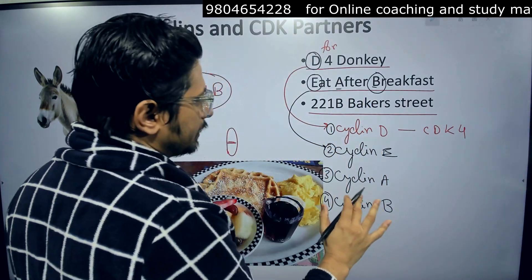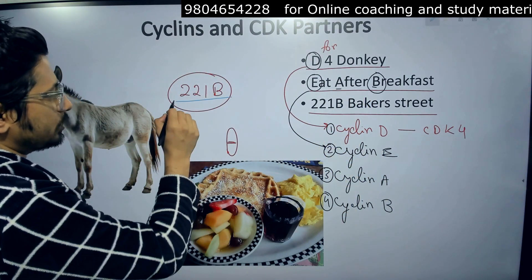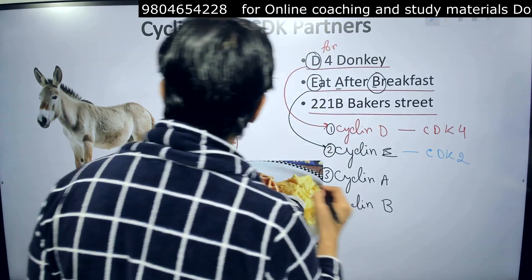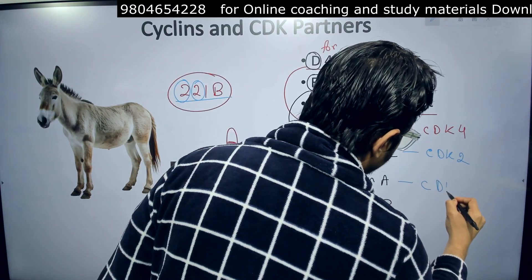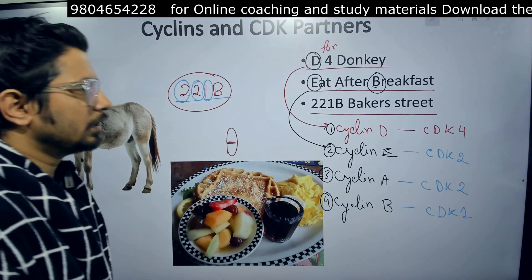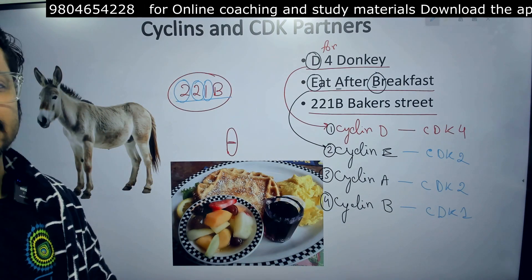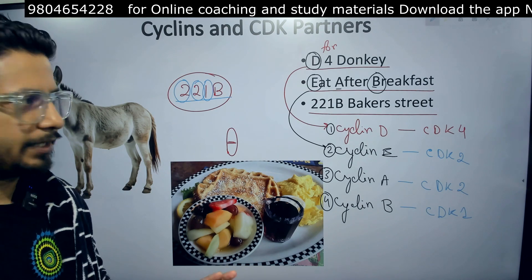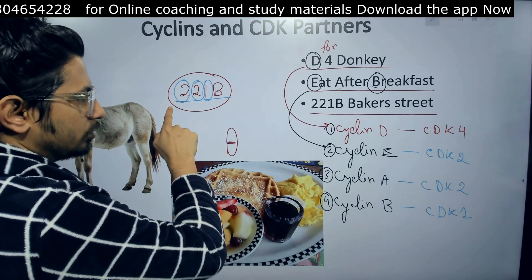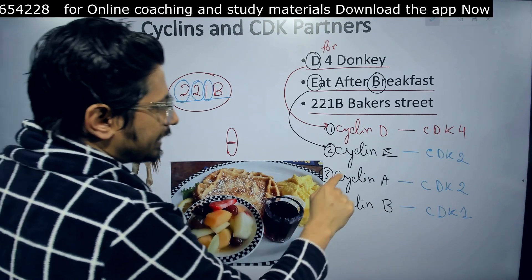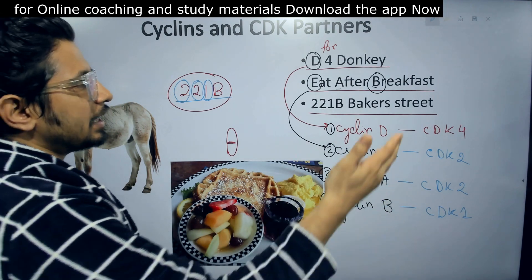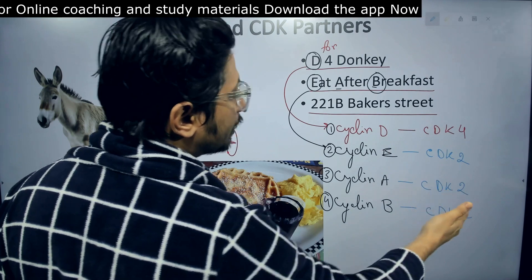Now for the CDK partners — remember Sherlock Holmes' address: 221B. So you have a 2: write CDK2. Another 2: write CDK2. And another 1: write CDK1. So for cyclins and their CDK partners, the table is: cyclin D associated with CDK4, cyclin E associated with CDK2, cyclin A associated with CDK2, and cyclin B associated with CDK1. That is cyclin D, E, A, B paired with CDK4, CDK2, CDK2, and CDK1 respectively.